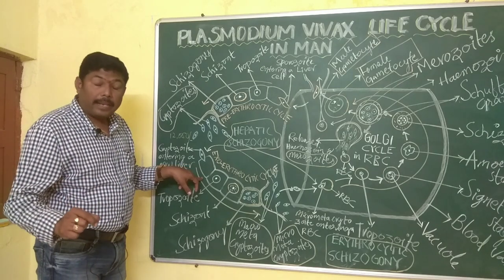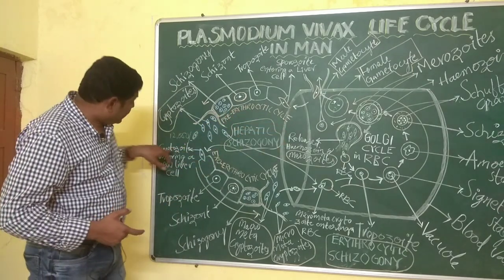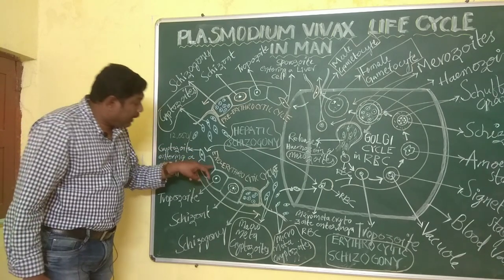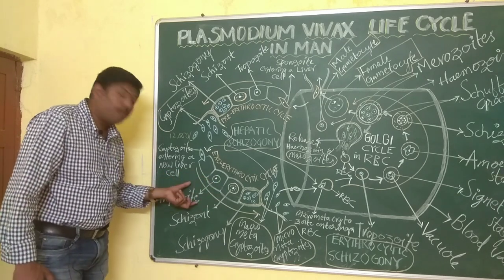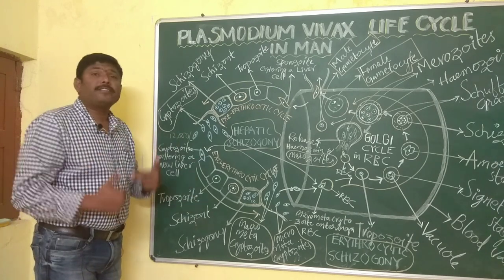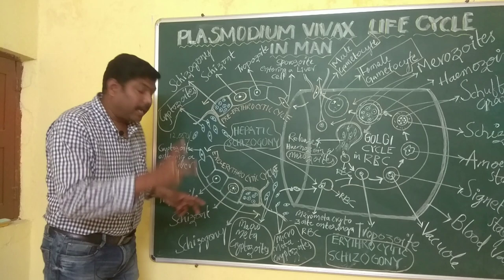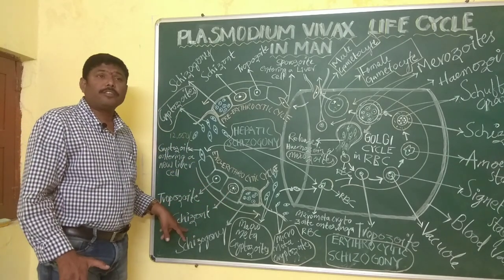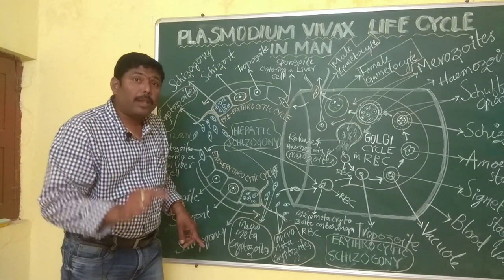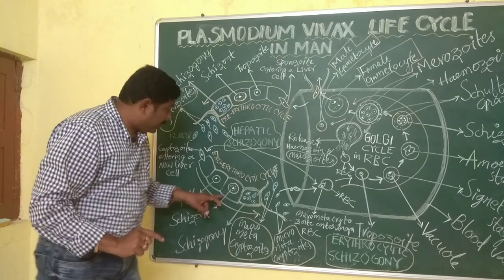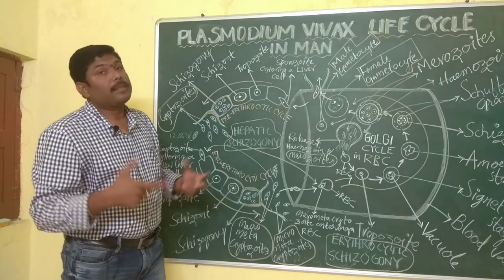When the cryptozoite enters into the RBC, it completes the life cycle similar to that of the pre-erythrocytic cycle. The cryptozoite assumes a spherical shape — that stage is called the trophozoite. In this trophozoite stage, it feeds on the substance present in the liver cell, increases in size, and that is called the Schizont. In the Schizont stage, it undergoes Schizogony — that means asexual multiple fission — and the nucleus divides into many nuclei, each surrounded by some amount of cytoplasm.